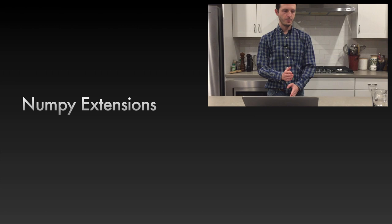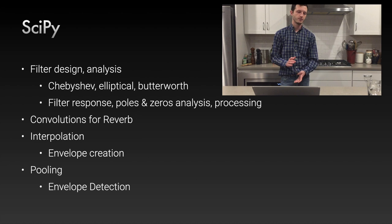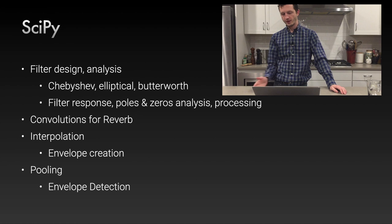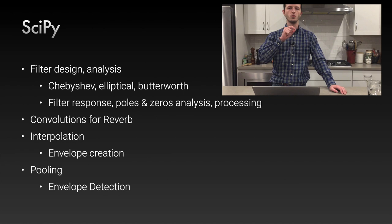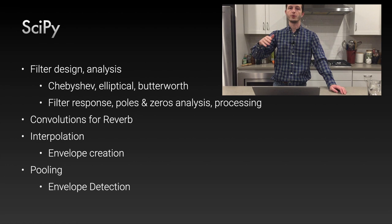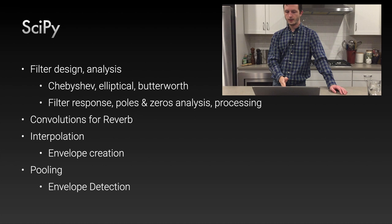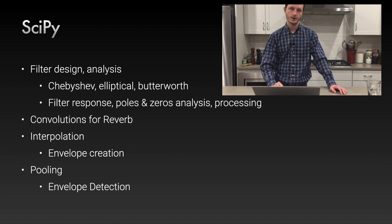There are many libraries built on NumPy. SciPy is specifically useful for sound design: it has filter design and analysis, frequency response graphs, poles and zeros analysis. SciPy has convolutions necessary for reverb, interpolation for designing envelopes by placing points on a curve and having SciPy draw the curve between those points. It also has pooling, useful for envelope detection — take the period of the wave, run a max pool at that period, then a mean pool to smooth it out for a perfect envelope.